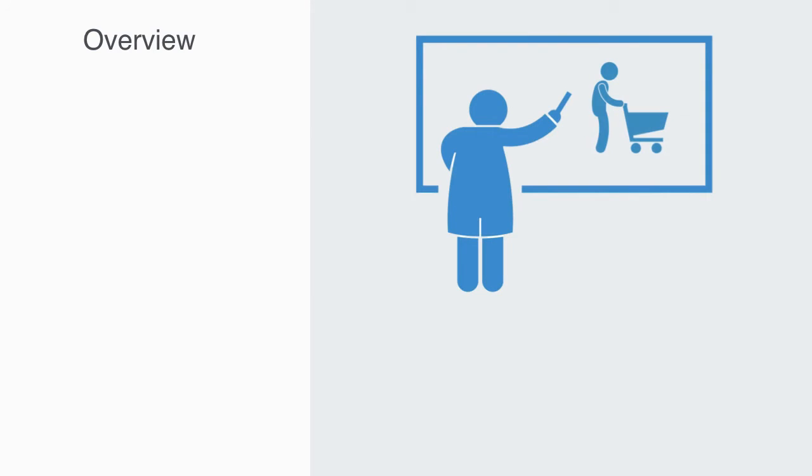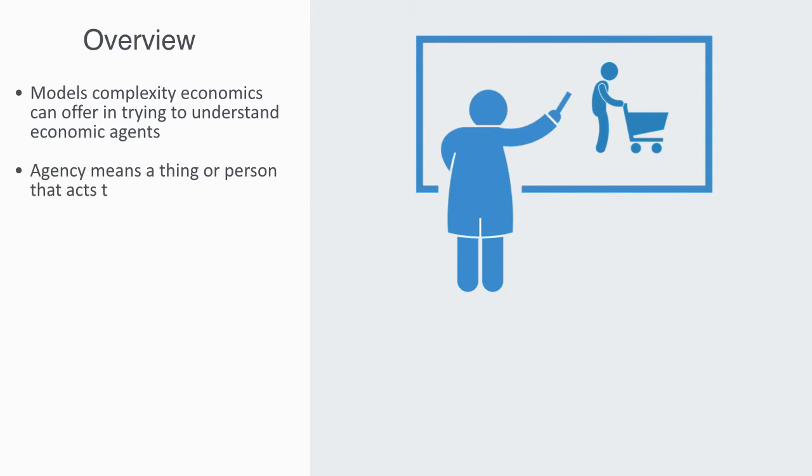In this section of the course we'll be turning our attention to what insights and models complexity economics can offer us in trying to understand the basic building blocks of economics, that is to say people or agents. Agents are so called because they have agency,